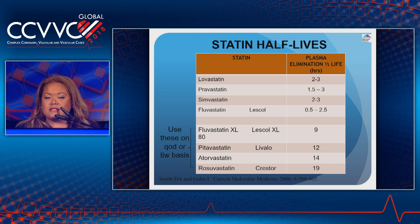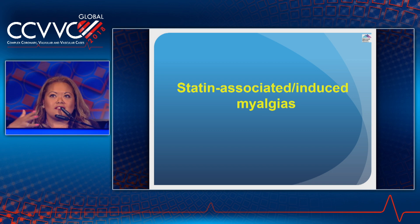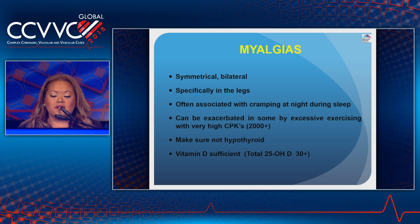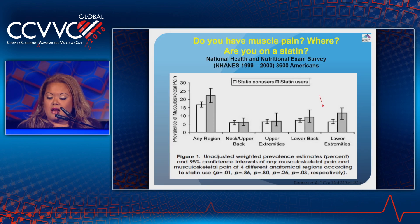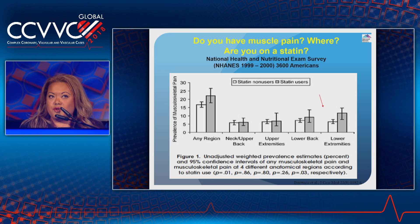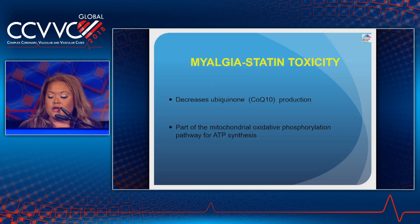So what are the major clinical problems using statins? Why don't we get our patients on high dose statins and keep them on them? Myalgias. How do we define myalgias? Typically they're bilateral and symmetrical, specifically in the legs, and often associated with cramping at night during sleep. The National Health and Nutritional Exam Survey collected data from 1999 to 2000, asking 3,600 Americans about musculoskeletal pain during the last 30 days among statin users and non-statin users, and it showed that the most common sites of myalgias among statin users are the lower extremities.